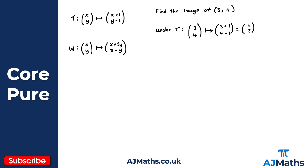So therefore the image under T is four, three. My x-coordinate is four and my y-coordinate is three. That's my first transformation — hopefully that should seem quite straightforward, nothing too challenging.